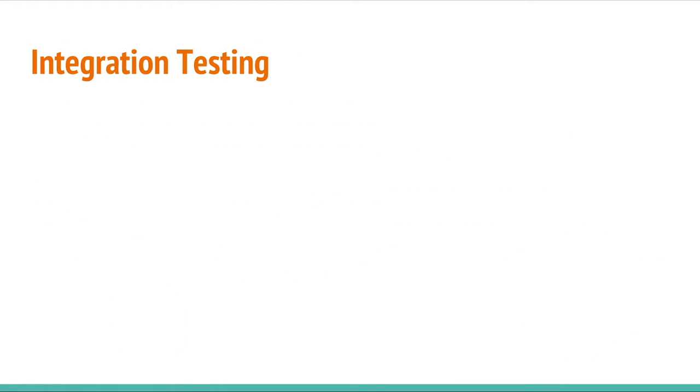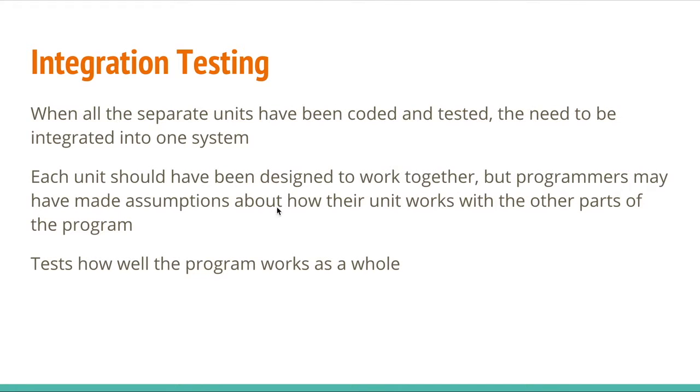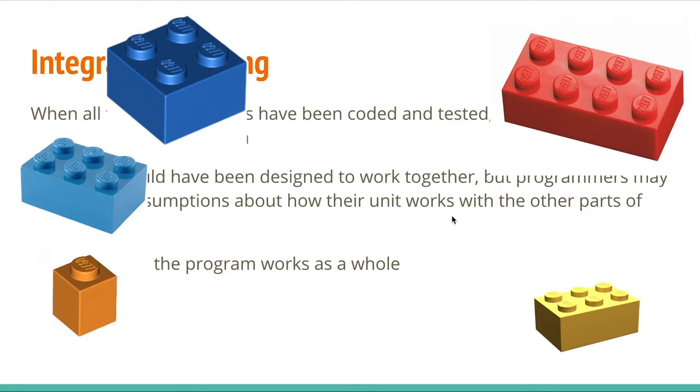Now, we have integration testing, which is when all the separate units have been coded and tested, then they need to be integrated into one system. And each unit should have been designed to work together, but programmers may have made assumptions about how their unit works with other parts of the program. So, in unit testing, you usually have different development teams or different programmers working on each unit. That's why you need to have integration testing to see if those units work together as a whole. So, it tests how well the program works as a whole.